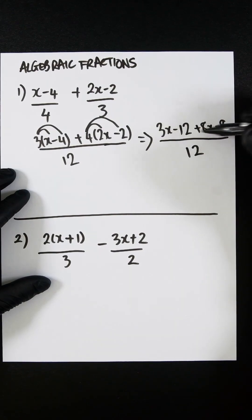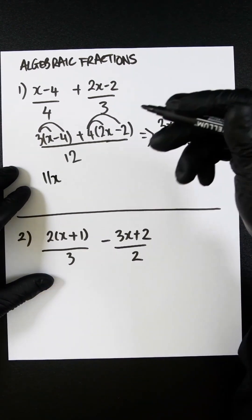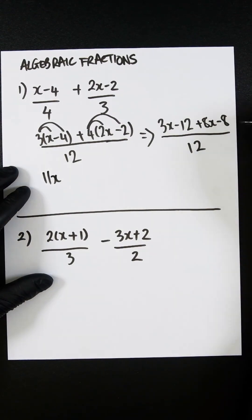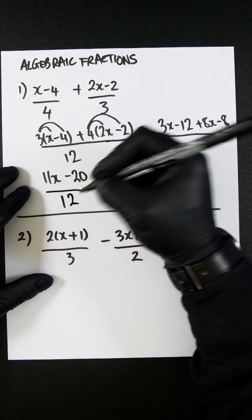We can now clean this up because we have 3x and 8x, which is going to be 11x. And then we have minus 12 and minus 8, which is going to be minus 20. That's going to be all over 12.